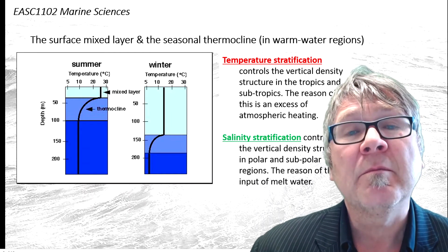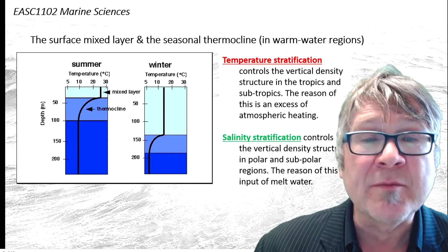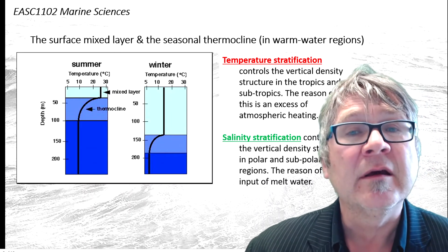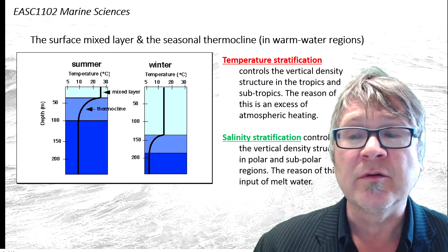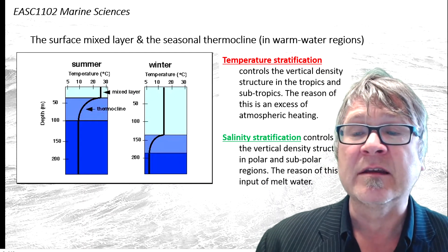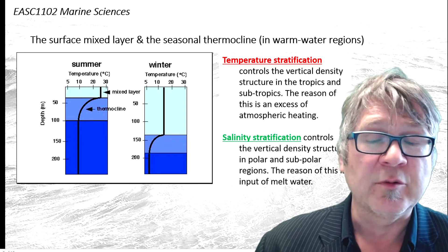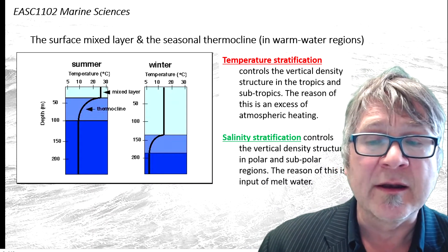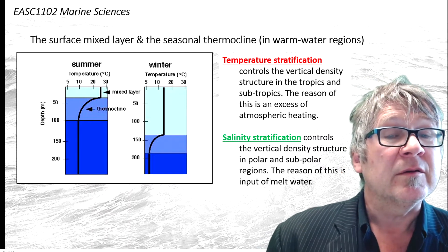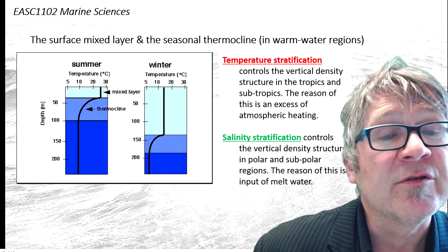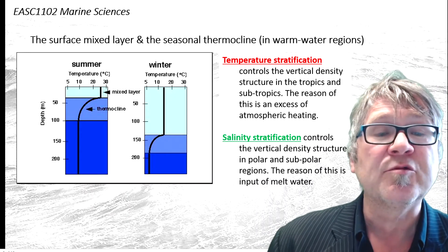These thermoclines are influenced by two processes: wind mixing and the so-called convection process. This sketch shows the difference between summer and winter distribution in one region. So temperature stratification controls vertical density structure in the tropics and subtropics, and the reason for this is an excess of atmospheric heating.